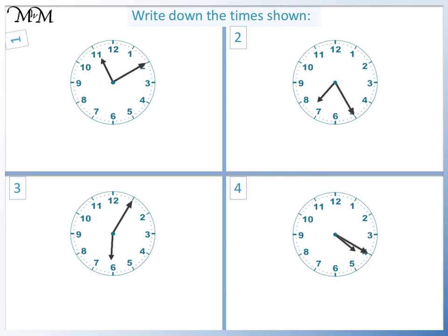Question 1. The minute hand is pointing to 2. 5 times 2 equals 10, so 10 past. The hour hand is past 11. The time is 10 past 11.